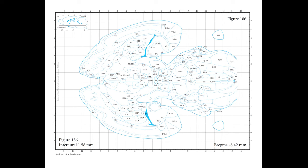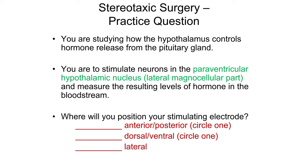Now let's look at a question like you would see on the exam. You're studying how the hypothalamus controls hormone release from the pituitary gland, so you'll stimulate neurons in the paraventricular hypothalamic nucleus — specifically the lateral magnocellular part — and then measure resulting hormone levels in the bloodstream. The question is: where will you position your stimulating electrode? First, figure out where this structure is in the brain — you can use any slice. Then find the structure and decide where to position the electrode. Pause the video and make sure you can do this on your own.